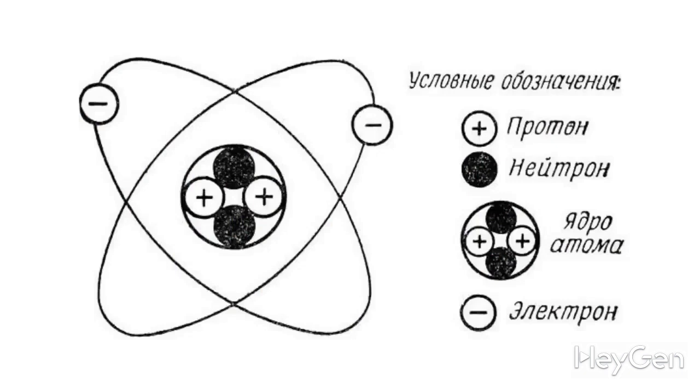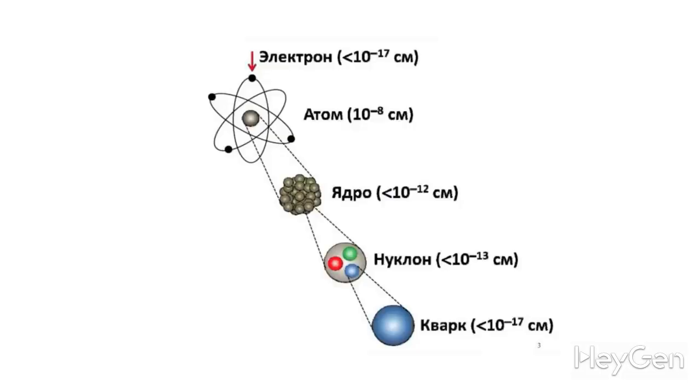While discussing all these smallest particles, we completely forgot about neutrons, which along with protons are part of the atomic nucleus. Neutrons, like protons, belong to the group of nucleons, and according to modern science also consist of quarks. Everything mentioned earlier about quarks applies to neutrons as well.